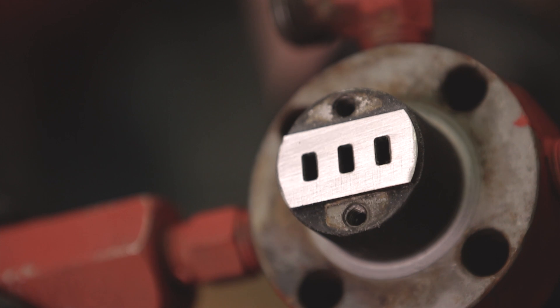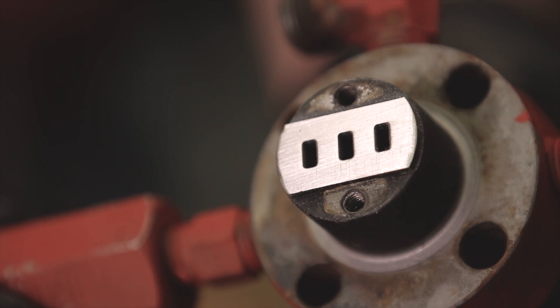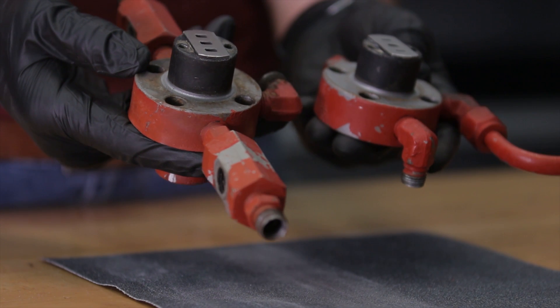After sanding the port plates, use the air nozzle to make sure the inside orifices are all clear. Repeat this process for the main piston housing.